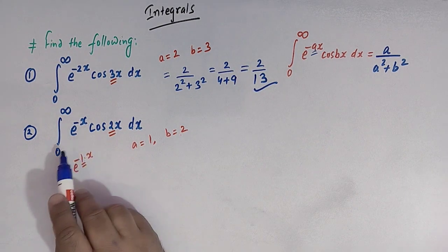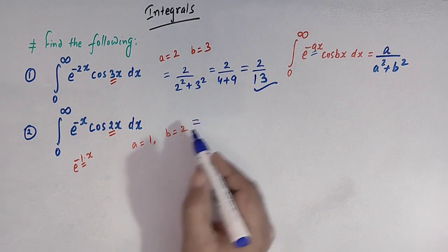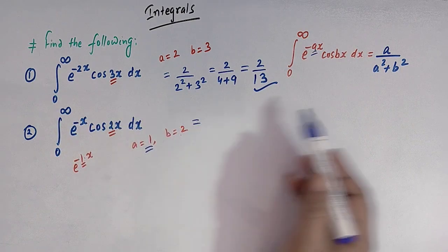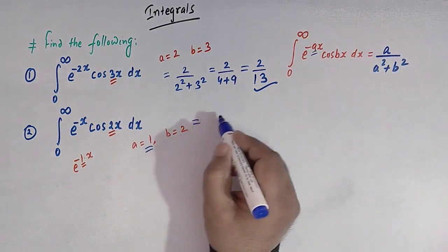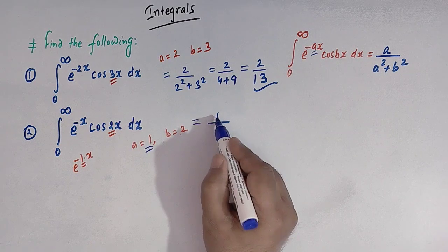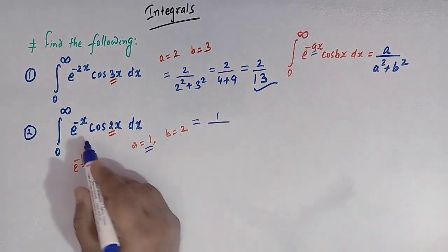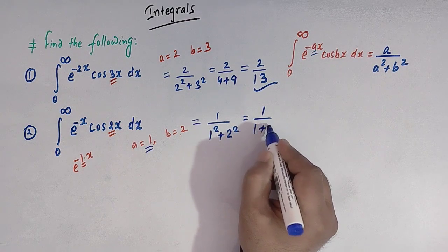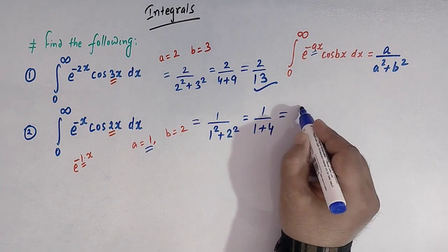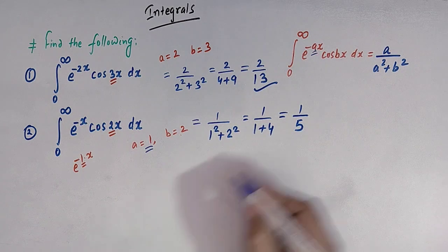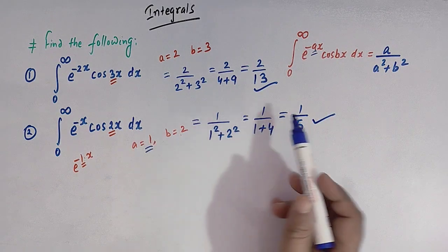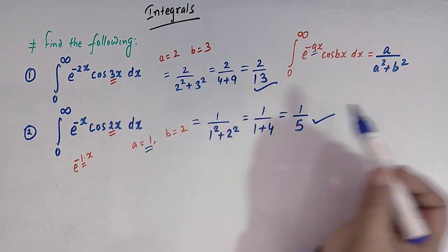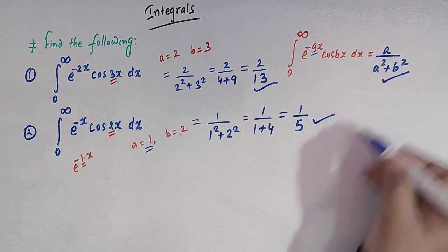Similarly, for the second integral, the value of a is 1 and b is 2. So the value of this integral by this rule can be written as 1 over 1 squared plus 2 squared, that is 1 over 1 plus 4, which equals 1 over 5. This is how we can find the direct value of these kinds of integrals using this result.